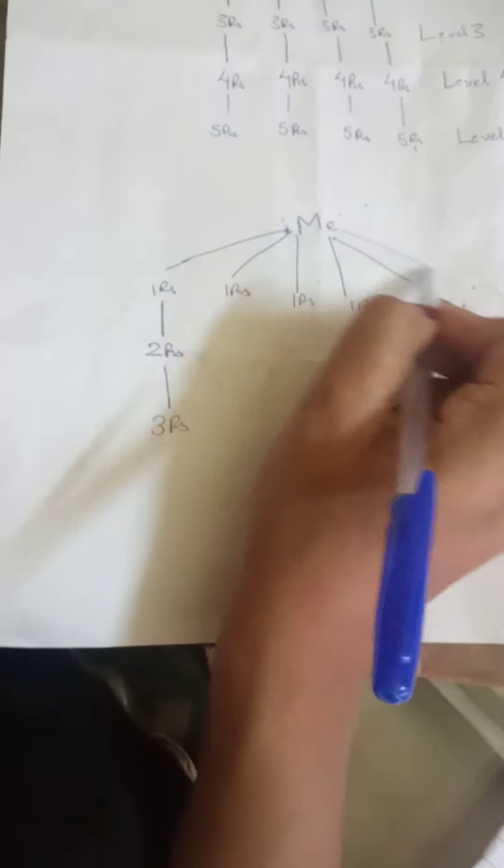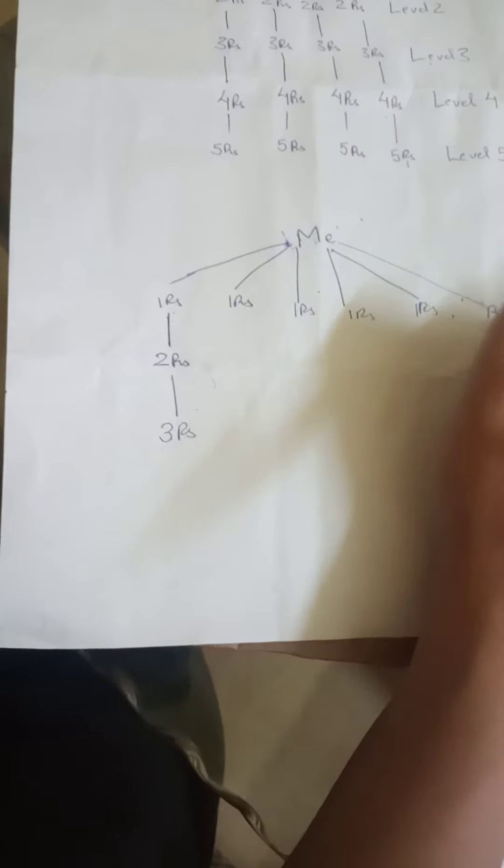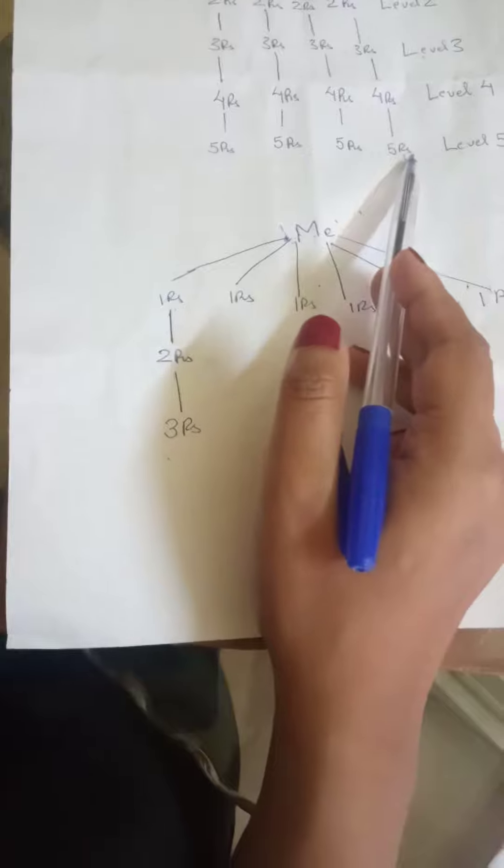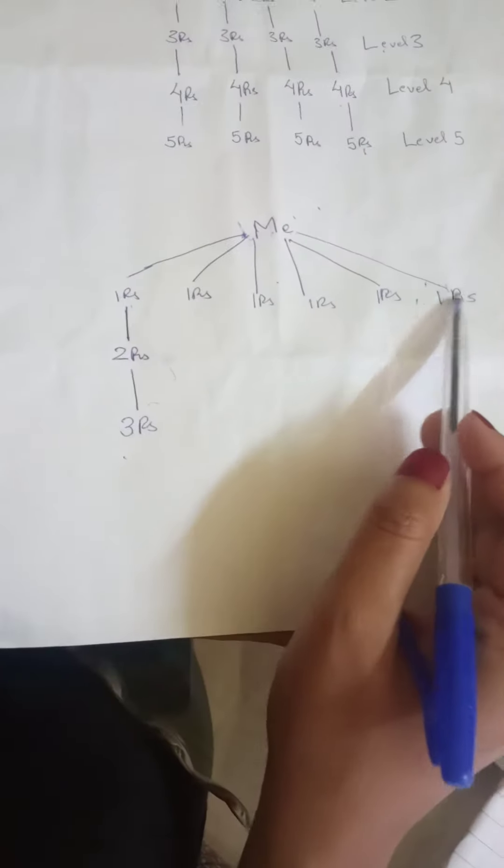Now if there's another person, I might just register that person here and I will qualify for level five, since I've got six direct downlines.